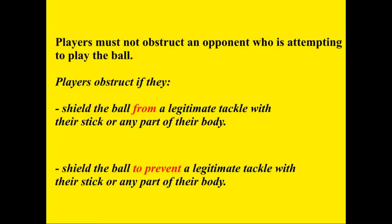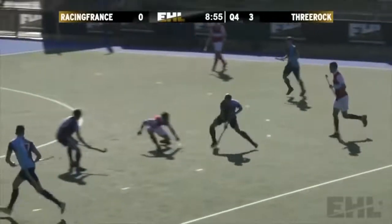The next clause says that players obstruct if they shield the ball from a legitimate tackle with their stick or any part of their body. I don't think the word 'from' makes any sense here grammatically or semantically, and replacing it with the words 'to prevent' would make sense of the clause — that is what the obstruction rule should be about: the illegal prevention of a legitimate tackle. So 'players obstruct if they shield the ball to prevent a legitimate tackle with their stick or any part of their body' is a clearer rendering. Did the attacker shield the ball to prevent a legitimate tackle by the defender? Again the answer is yes — that's obstruction.